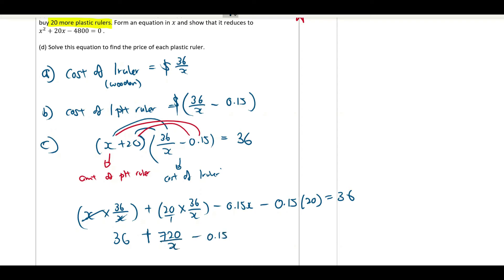Minus 0.15X minus 3. 0.15 times 20 is 0.3 times 10, that would be 36.